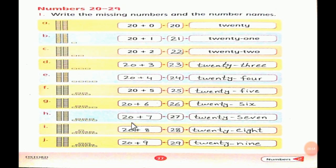20 plus 7 equals 27. We will write the spelling of 27: T-W-E-N-T-Y-S-E-V-E-N.